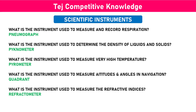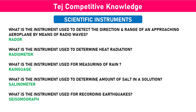What is the instrument used to measure the refractive indices? Refractometer. What is the instrument used to detect the direction and range of an approaching aeroplane by means of radio waves? Radar. What is the instrument used to determine heat radiation? Radiometer.